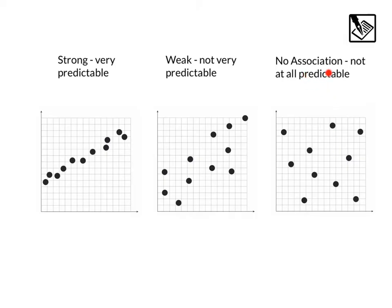And no association means when we look at it, we really can't find any pattern. These dots appear to just be randomly scattered throughout. That would have really no association at all.